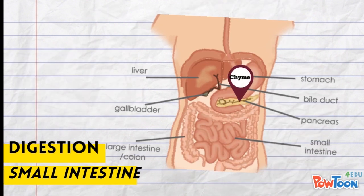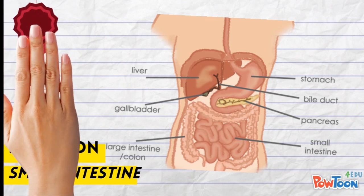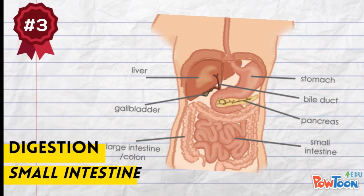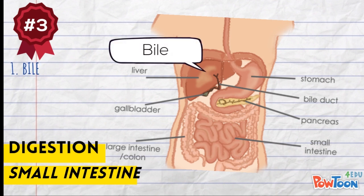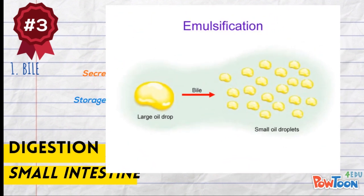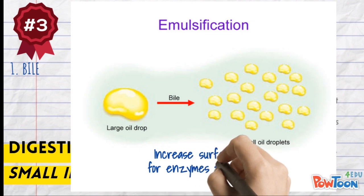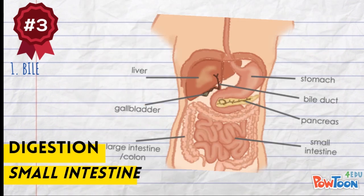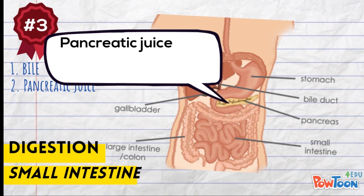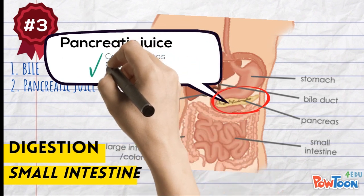The mixture of food, known as chyme, is then transported from the stomach to the small intestine for further digestion. There are three juices secreted along the way to facilitate that. The first one is bile, secreted in the liver and stored in the gallbladder. Bile emulsifies fats into smaller oil droplets so that there is a larger surface area for enzymes to work on later. The second juice is pancreatic juice, secreted by the pancreas, which contains various enzymes that digest carbohydrates, fats, and proteins respectively.